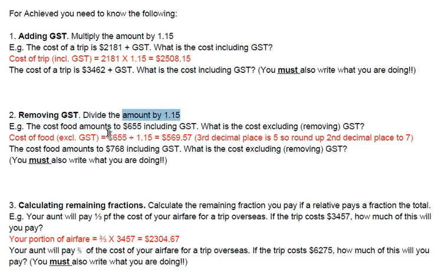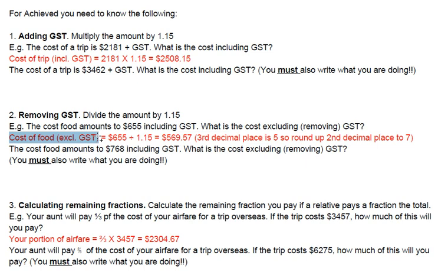So the cost of food amounts to $655 including GST. What is the cost excluding GST? You have to write down a label — 'cost of food excluding GST' — followed by the calculation between the equals signs, followed by the result. Simply start with the value that included GST, which was $635, divide by 1.15, and you get your result. You need to set it out with a label, followed by calculation, followed by result.